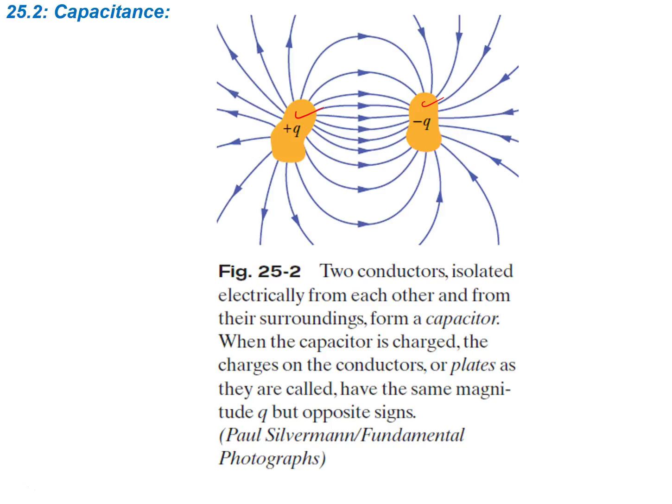When the capacitor is charged, the charges on the conductors, or the plates as they're generally called, have the same magnitude Q but opposite signs. So when we're talking about conductors, they're going to have the same magnitude of charge, but one's going to be positive and one's going to be negative. Looking at the electric field, we can see the sort of pattern that occurs in between, which is what we would expect with the electric field due to a dipole.